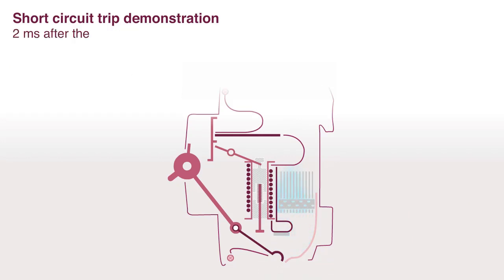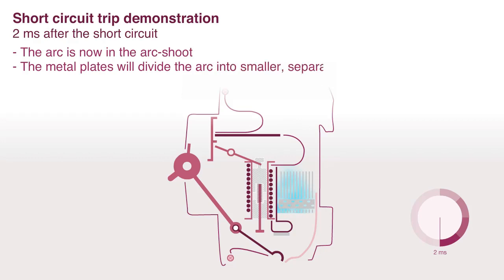Two milliseconds after the short circuit, the arc is now in the arc chute. The arc is now separated into smaller arcs. The arc voltage between two metal plates is smaller than 30 volts.